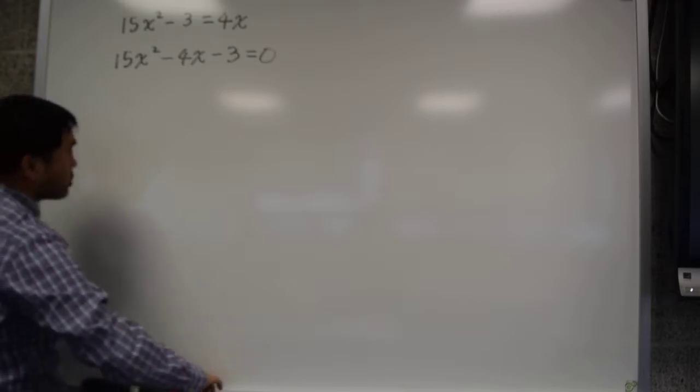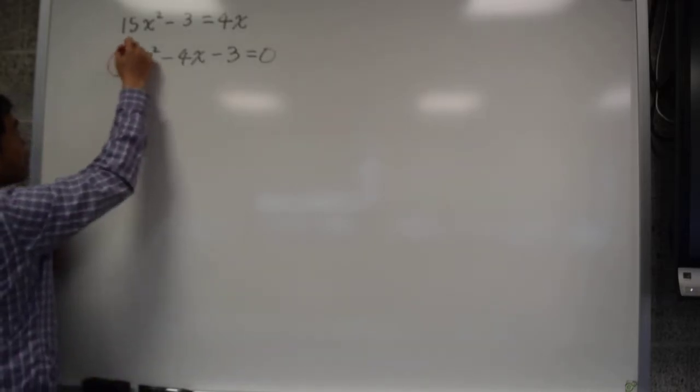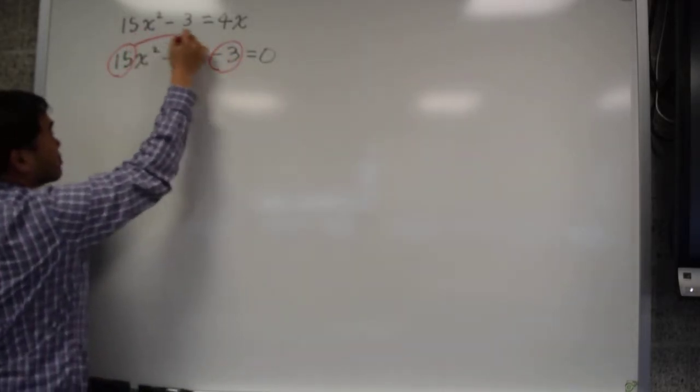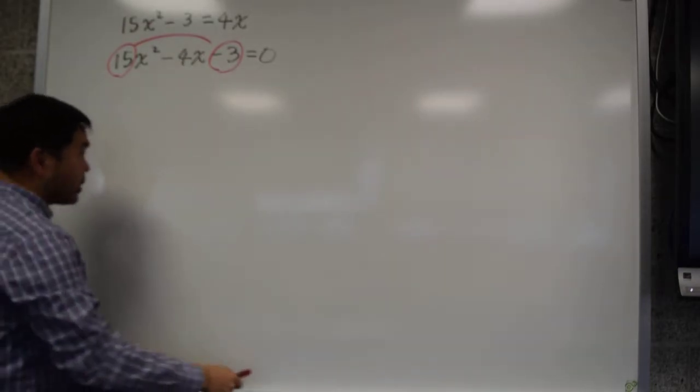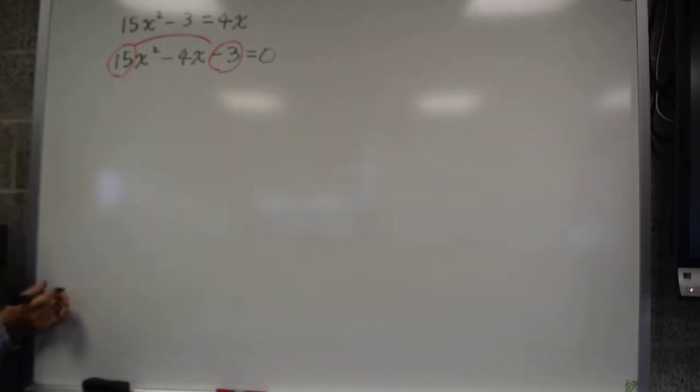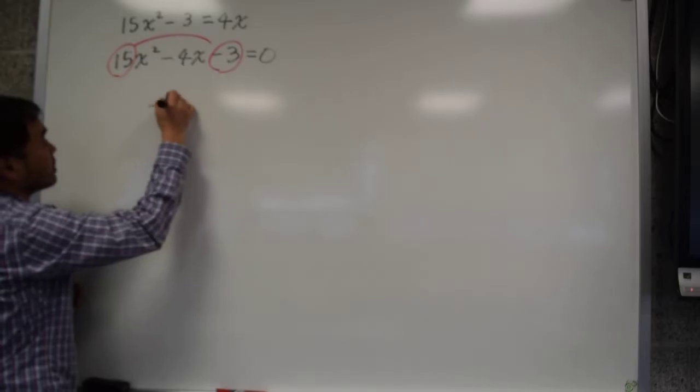So what is factor by grouping? Step 1, you want to multiply these two numbers, the first and the last. Multiply them. And what's the number that you get? Negative 45. So you get negative 45.